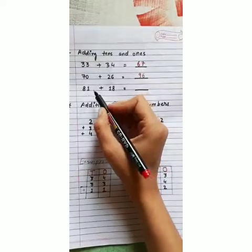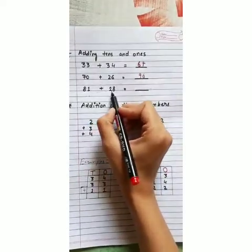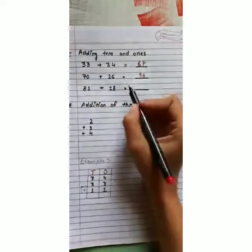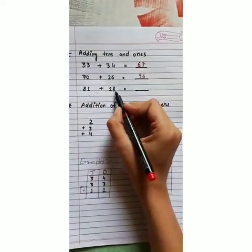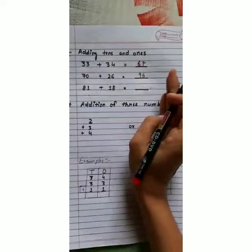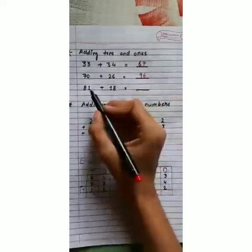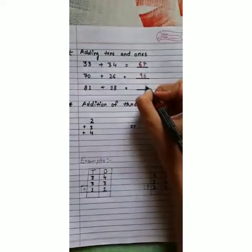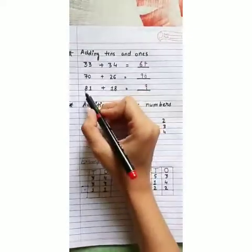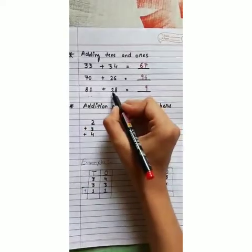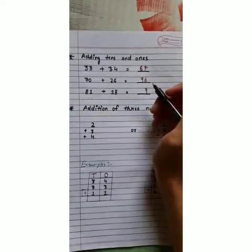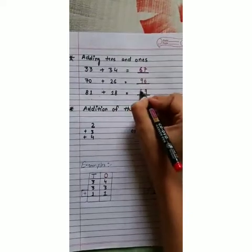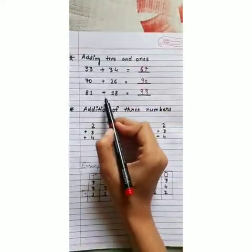Third one: eighty-one plus eighteen. One is at one's place and eight is at one's place — one plus eight is nine. At tens place, eight and one are written: eight plus one is nine. So, eighty-one plus eighteen equals ninety-nine.